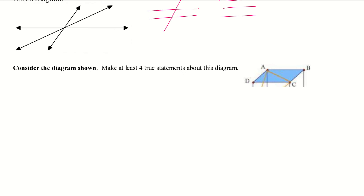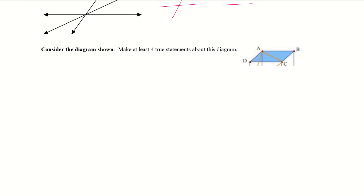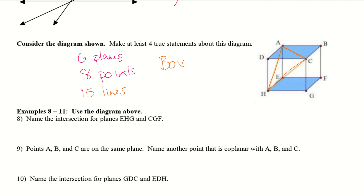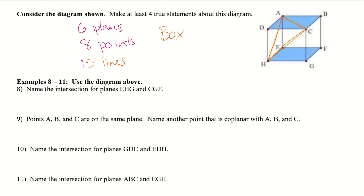Consider the diagram shown — make at least four true statements about this diagram. I came up with: there were six different planes, I counted eight points, there are 15 lines — and those 15 lines also included the triangle right in the center — and we created a box. You probably came up with other things, like intersecting lines, parallel lines, perpendicular lines, and so on.